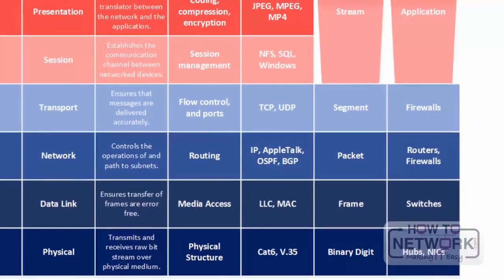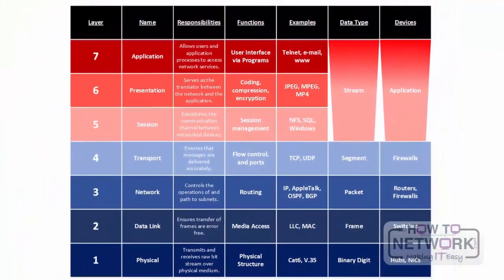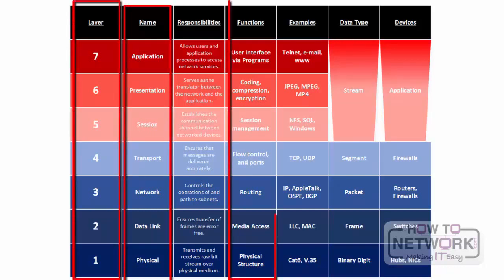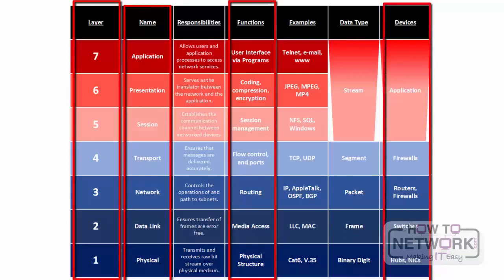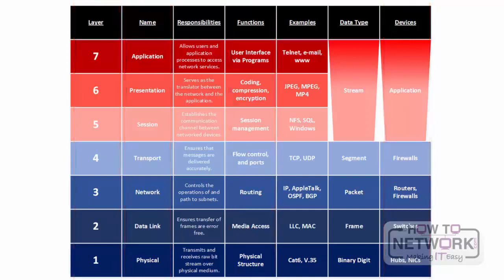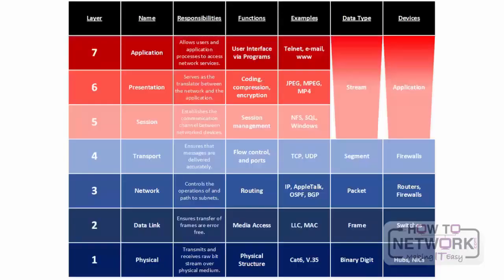Be prepared to pause the video. Here's your challenge: this chart is going to disappear in about 10 seconds. On a piece of paper, fill out columns 1, 2, 4, and 7 — the layer number, the name of the layer, the functions within that layer and what it's responsible for, and the devices that run at that layer. Go ahead and pause the video now. Let's pull the chart up again — how did you do? Go ahead and pause the video with this chart up and grade yourself.